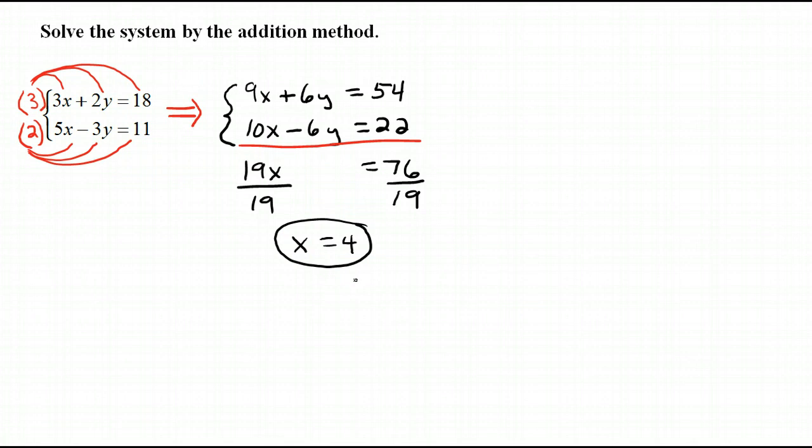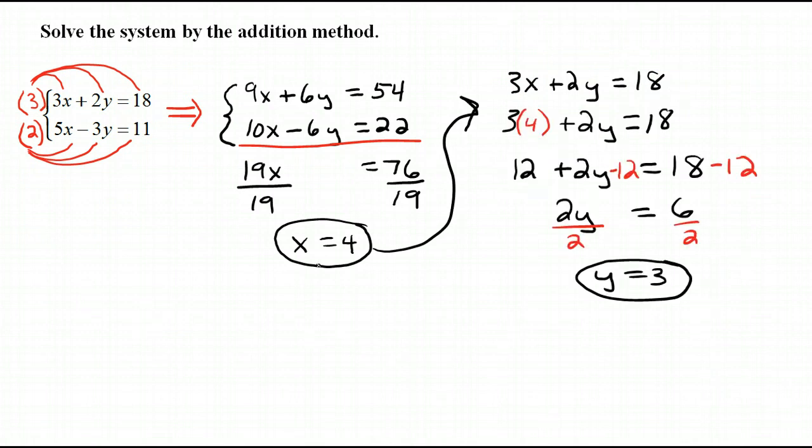From this point, it's going to look just like the problem we just finished. Once you find one of the variables, you need to stick it back up into one of these equations and find the other. Let's not put it in here, because if you've made a mistake getting from here to here, it's not going to show up. So pick either one of the original problems. I'll take the 3x plus 2y equals 18. I'm going to put 4 in and see what y is. When x is 4, I find that y is 3. So that means the solution is the point 4, 3.